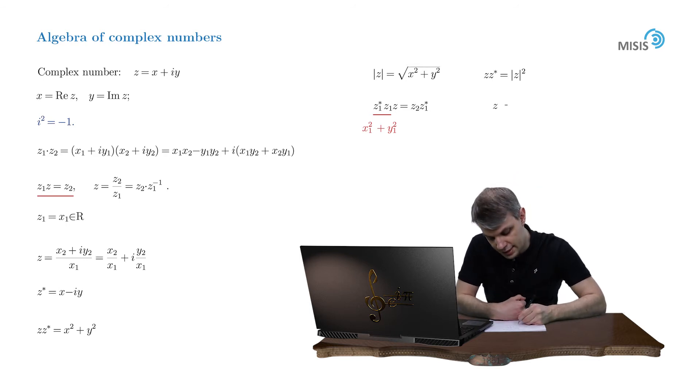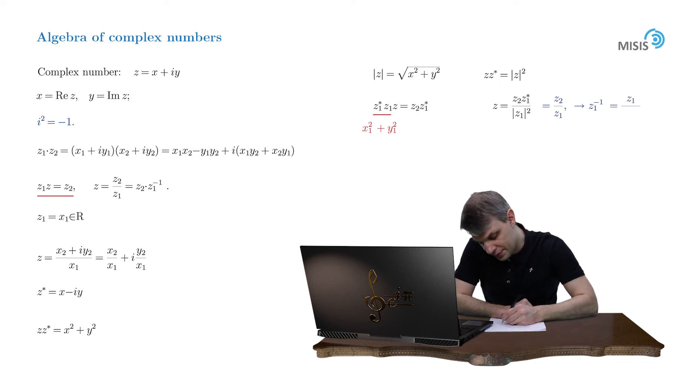And we obtain z equals z2 times z1 star divided by z1 modulus squared. And this right hand side is actually what we call the ratio of two complex numbers z2 and z1. And basically that means that z1 to the power of minus 1 is defined as z1 star divided by the square of its modulus.